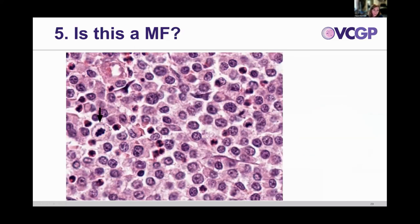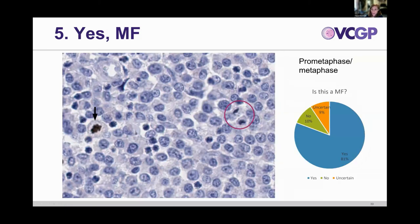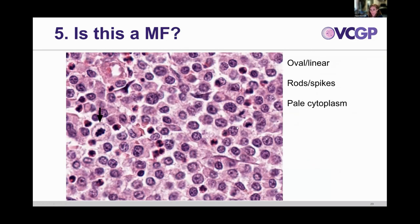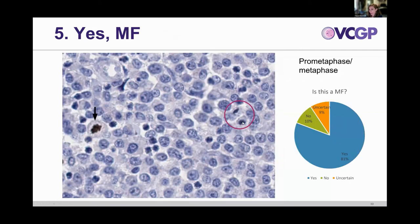Number five: the arrow points to a structure that is hyperchromatic in the center, very irregular, spiky, with a pale cytoplasm. The vast majority said yes — and yes, it is a mitotic figure. Going back you can also see a nice telophase: these two cells are separated, but using the one-cell-width guideline, you would count this as one structure. This telophase is also not staining with PHH3, which makes sense.